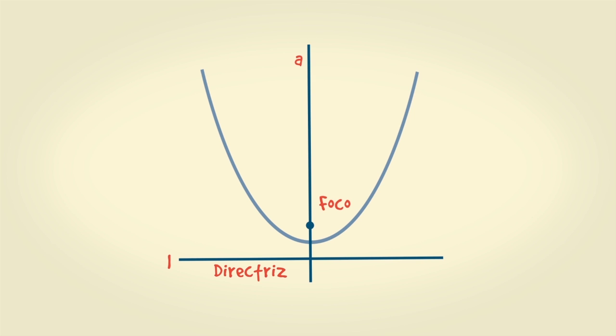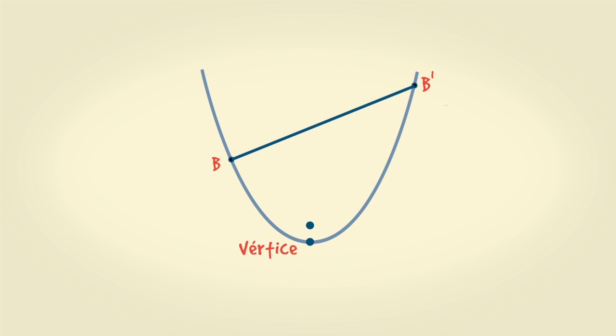El punto fijo F se llama foco y la recta fija L, directriz de la parábola. La recta A, que pasa por F y es perpendicular a L, se llama eje de la parábola. Al punto medio del segmento comprendido entre el foco y el punto de intersección del eje y la directriz, se llama vértice, que por definición está en la curva. El segmento de recta tal como B, B', que une dos puntos cualesquiera diferentes de la parábola, se llama cuerda.